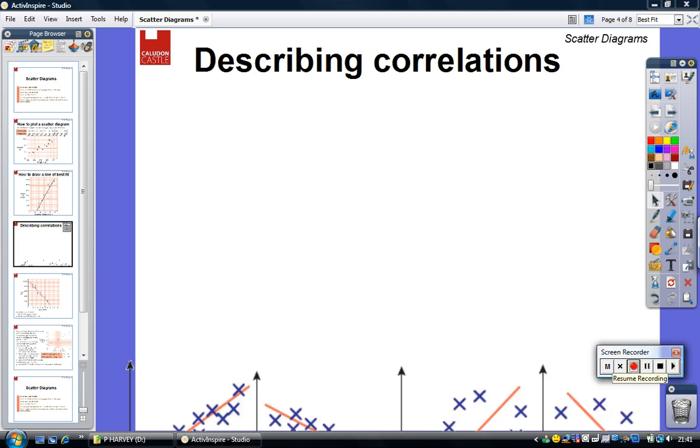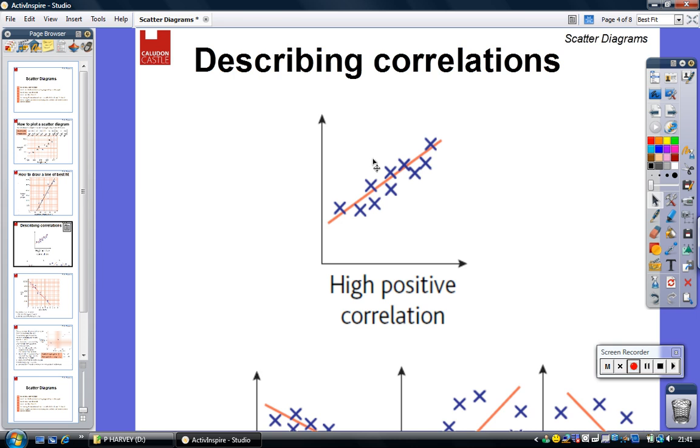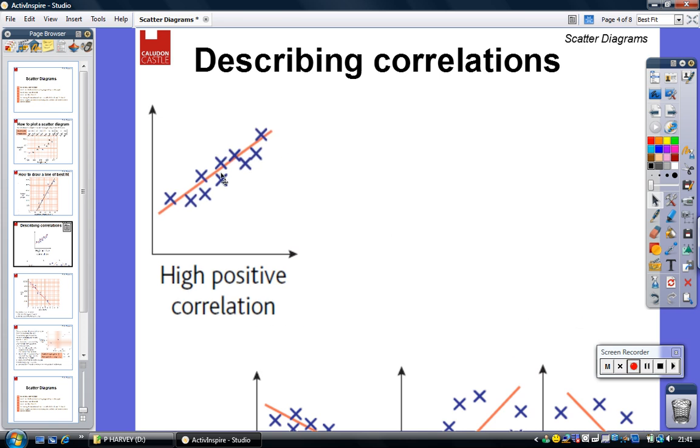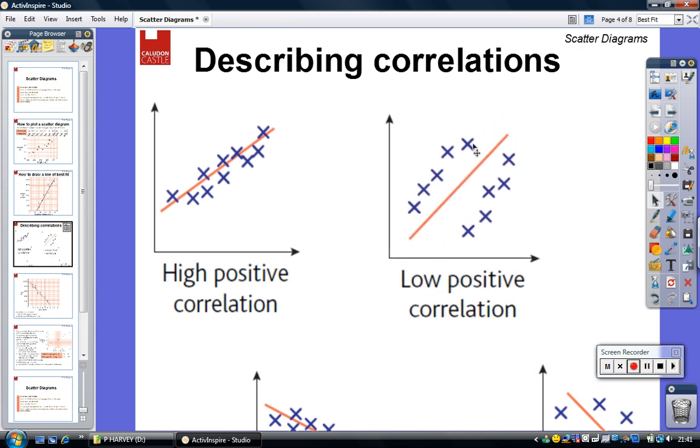The relationship between two sets of data is called a correlation. A high positive correlation would be where the line passes very closely to the points. Here we can see a low positive correlation because the points are further away from the line compared to the high positive correlation.